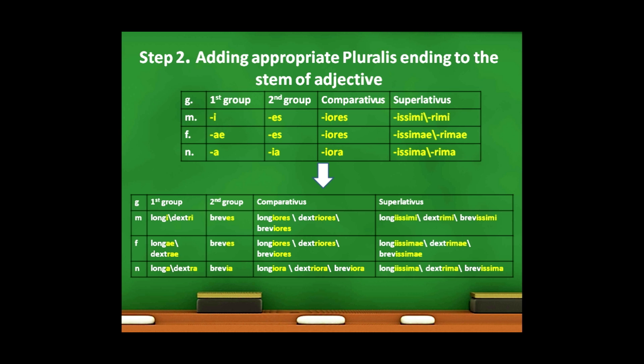Longi, dextri — masculinum pluralis. Longae, dextrae — femininum pluralis. Longa, dextra — neutrum pluralis. For the second group: breves — masculinum pluralis; breves — femininum pluralis; brevia — neutrum pluralis.